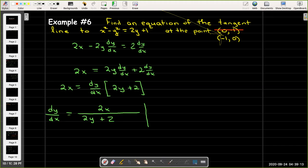All right, so the purpose of this video is to fix example 6 from the first video, and it was a very easy fix. The point should have been negative 1 comma 0 instead of 0 comma negative 1.